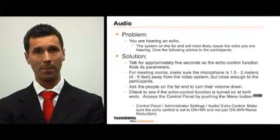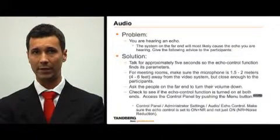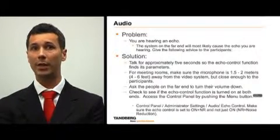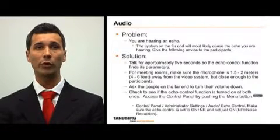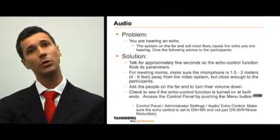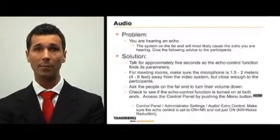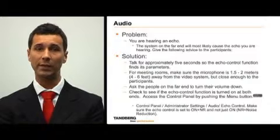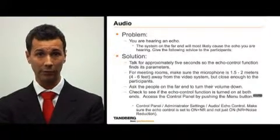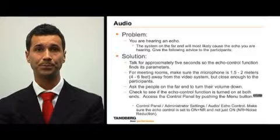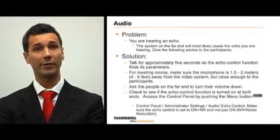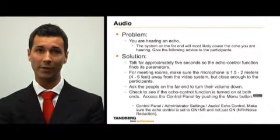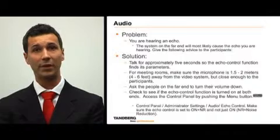If you are hearing an echo, in most cases it is the system on the far end causing the problem. When this occurs, give the participants at the far end the following advice: talk for approximately five seconds so the echo control function finds its parameters. Make sure they have placed the microphone one and a half to two meters, or four to six feet, away from the video system but close enough to the people who are talking. You can always ask the people at the far end to turn down their volume.